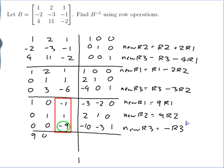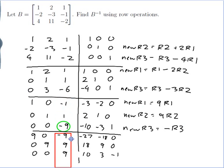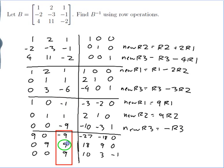So I get: row 1 — 9, 0, minus 9, minus 27, minus 18, 0. Row 2 — 0, 9, 9, 18, 9, 0. Row 3 — 0, 0, 9, 10, 3, negative 1. The reason I did that is so that while I'd like a 1 here eventually, I can first get zeros in the positions above and below by row addition and subtraction. So let's put a 0 up here: my new row 1 will be row 1 plus row 3.